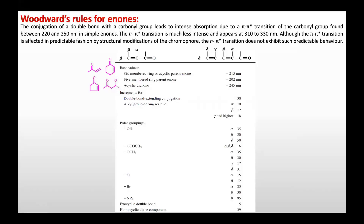The increments for enones are as follows: extended conjugation by a double bond adds 30. An alkyl group or ring residue at the alpha position increases lambda max by 10; substitution at beta increases it by 12; substitution at gamma, delta, or higher positions increases by 18. Polar OH groups at alpha, beta, gamma positions each have specific increments. Halides add position-dependent values. Amines at beta position add 95. An exocyclic double bond increases by 5, and a homoannular diene component adds 39 to the parent value.